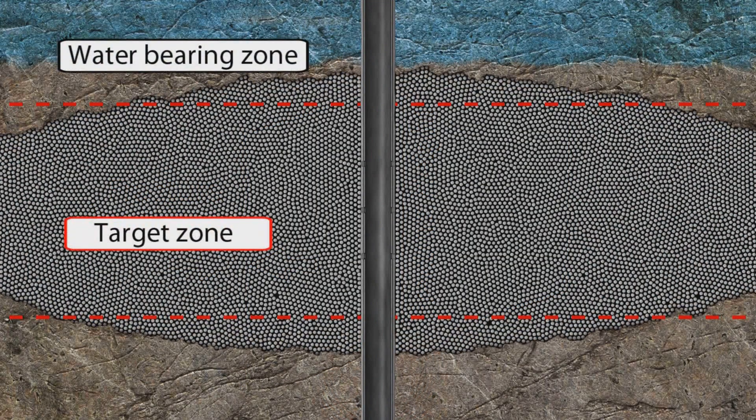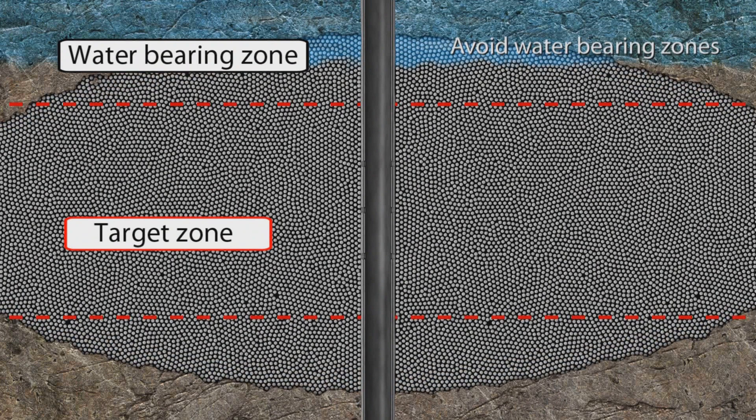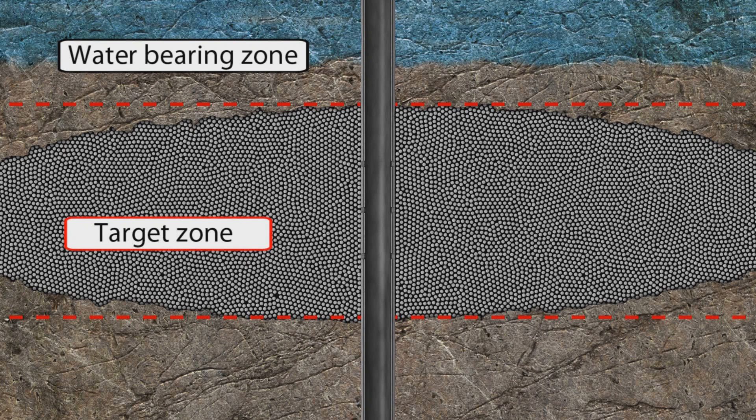Propped fracture height measurements are particularly important where there are water-bearing zones above the target formation. The propped fracture height can help to avoid the water-bearing zones and any other hazards by altering the perforation spacing and amount of fluid and propant pumped during the treatment.